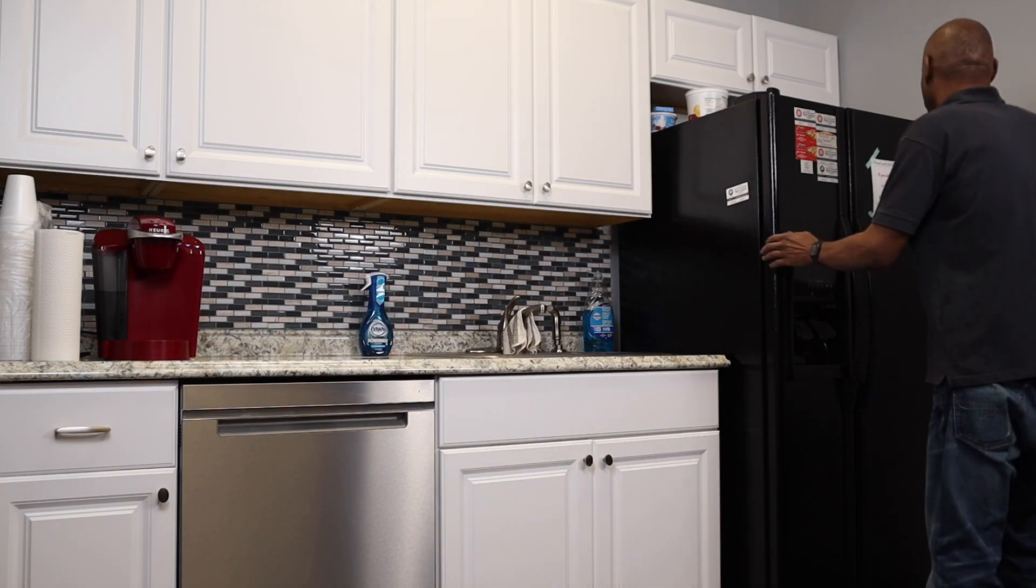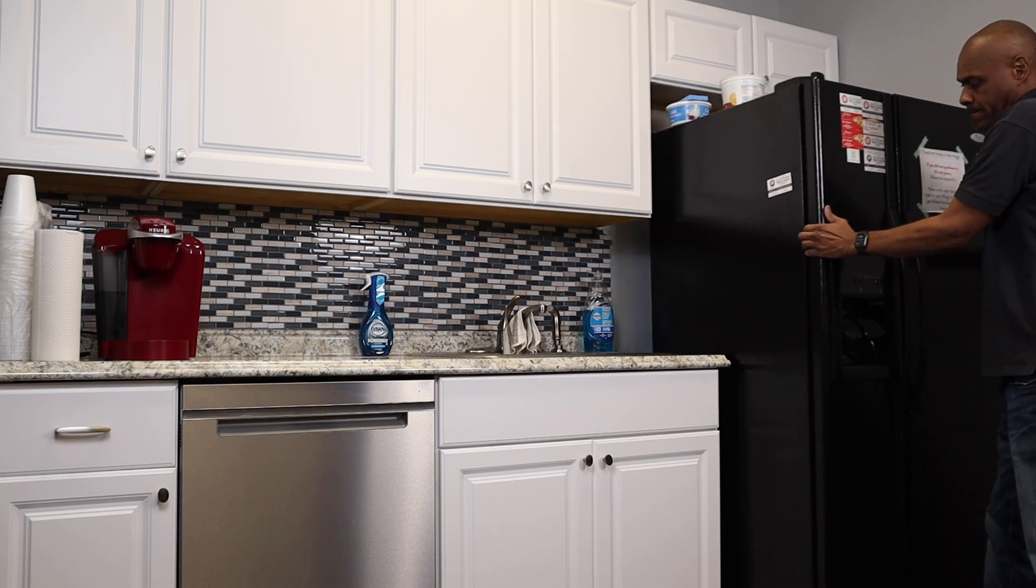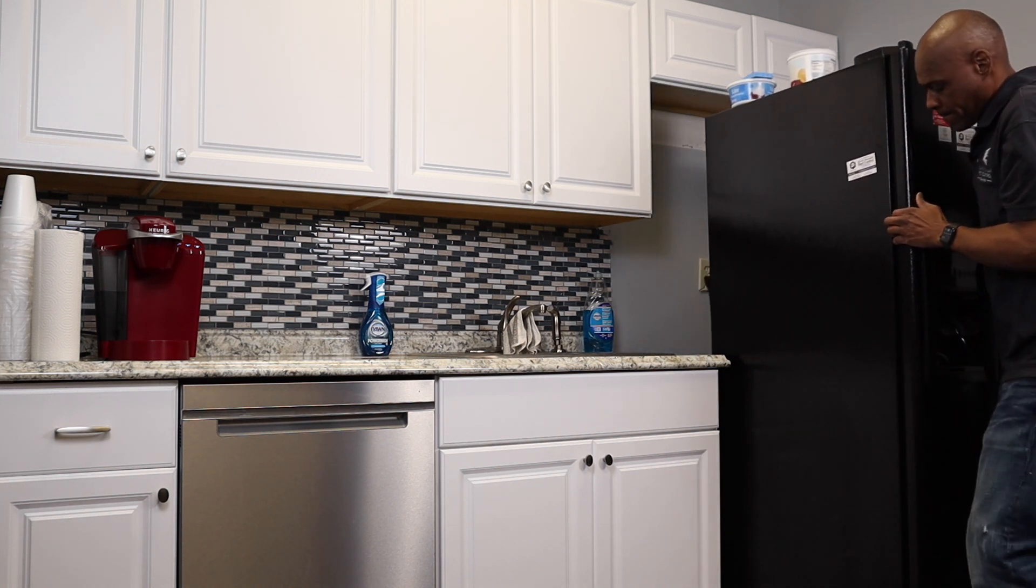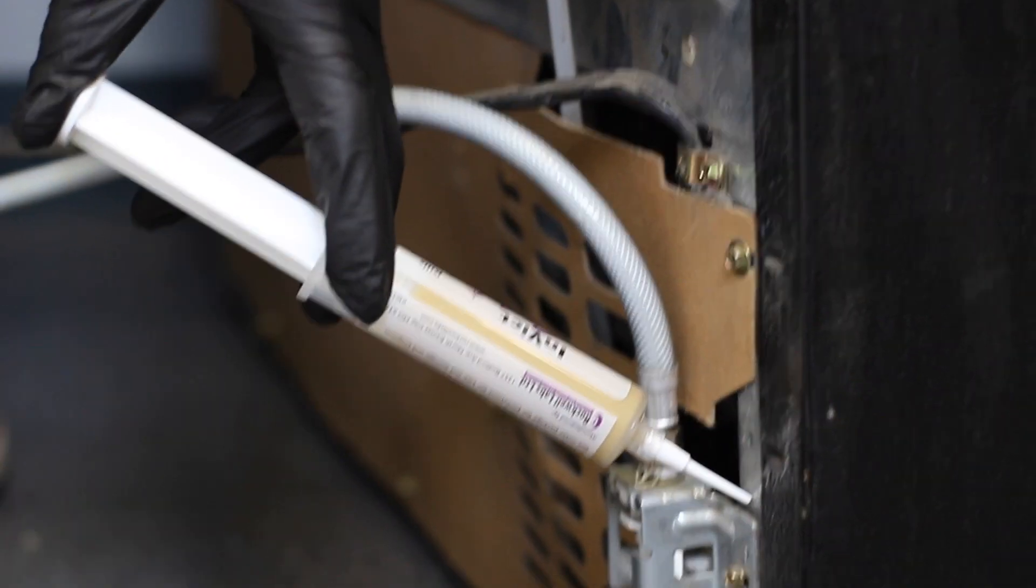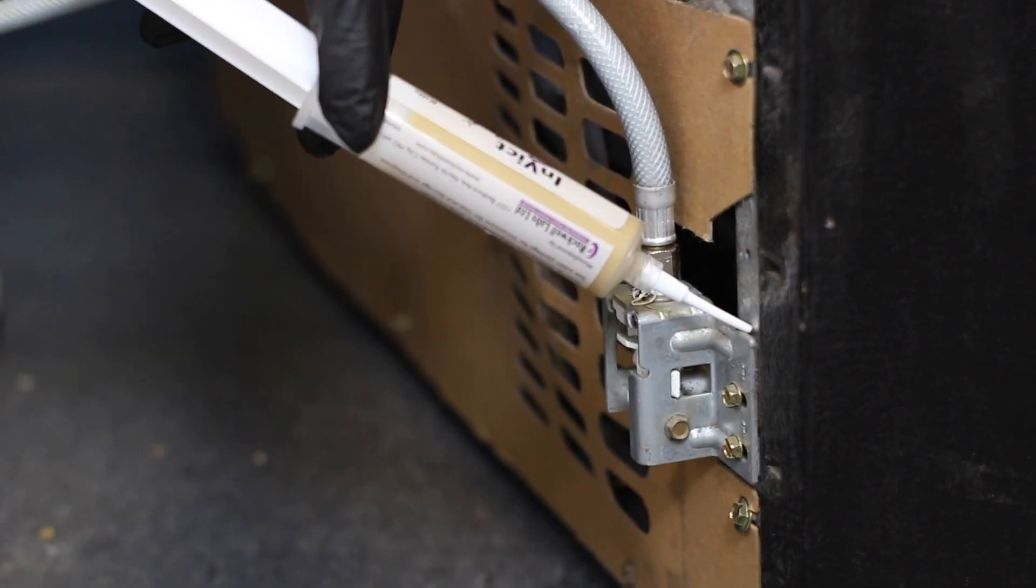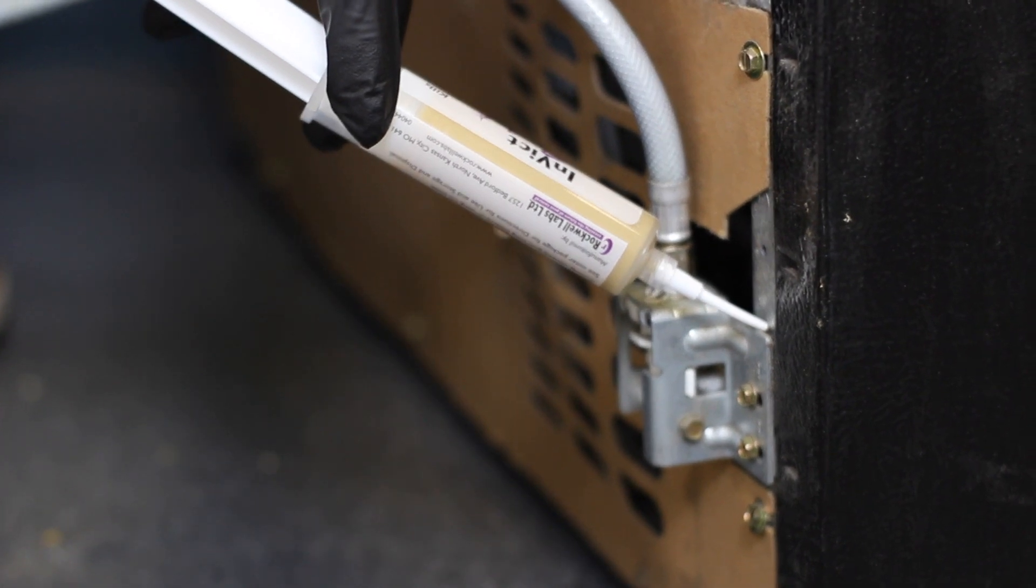The number one spot is going to be behind the refrigerator. This seems to be where you have the most German roaches because of the moisture. So around the bottom of the refrigerator where you have your cardboard covering, you'll see a lot of German roaches there and you can put your baits there.